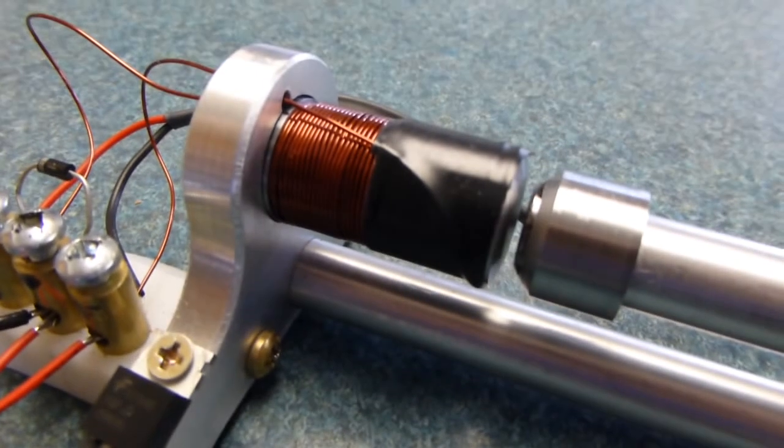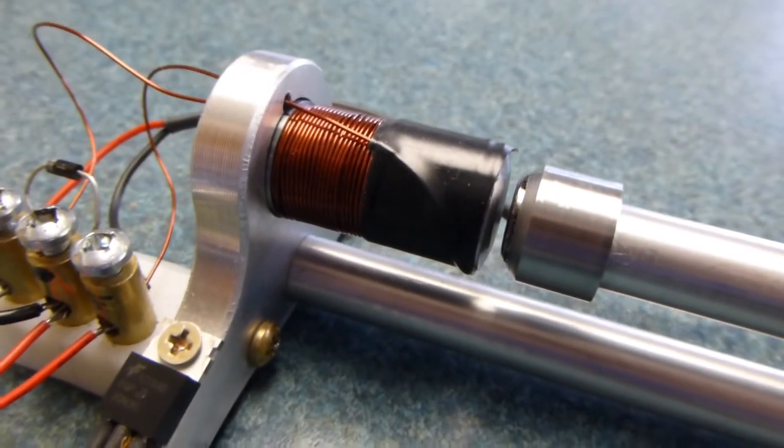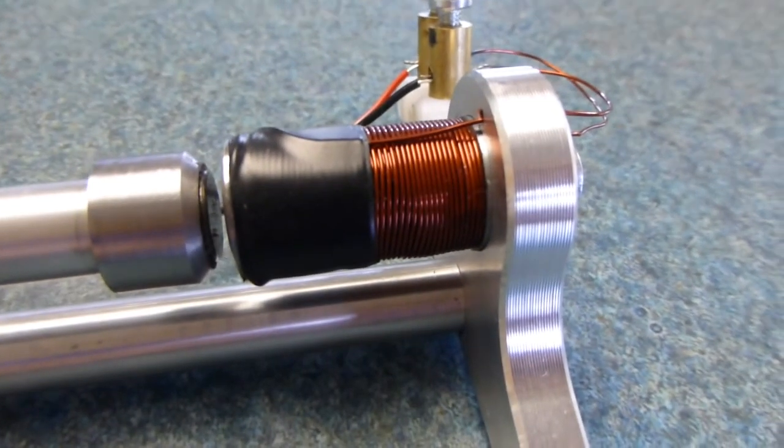And it has these arms that come out and have an N52 neodymium magnet pressed into them. It's got two of these electromagnet coils. They're about 40 feet of wire wound in 280 turns. It's aluminum wire because the copper stuff was just running too much current.